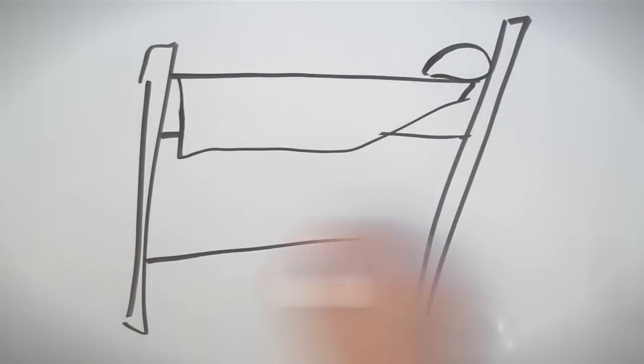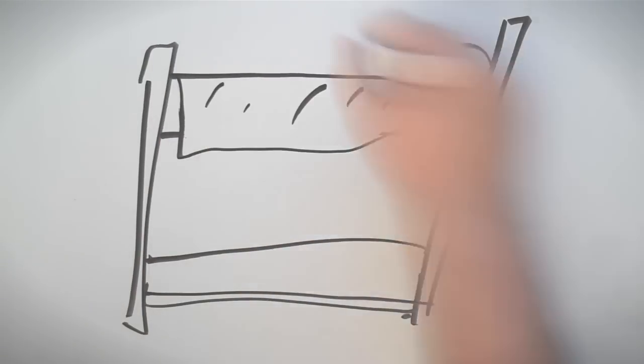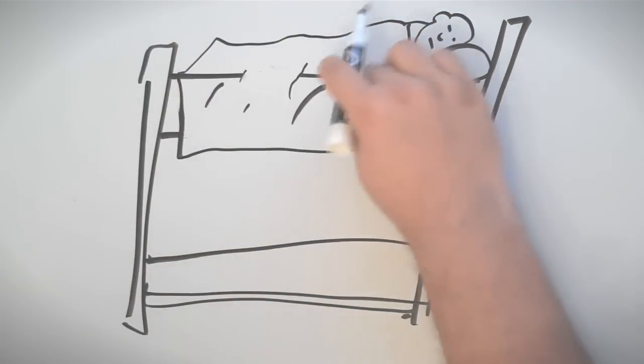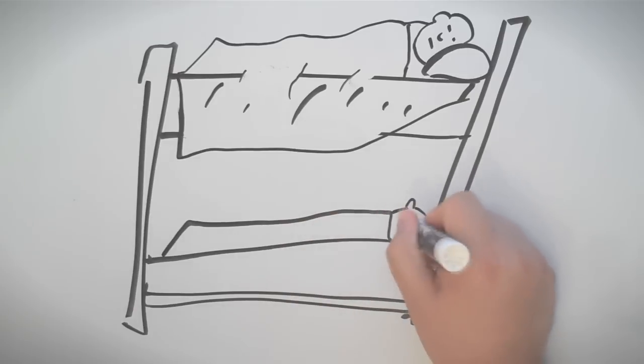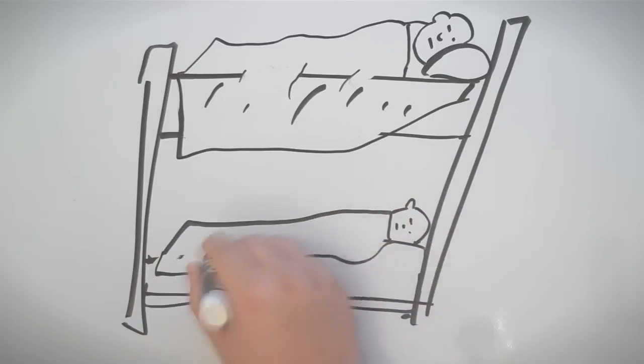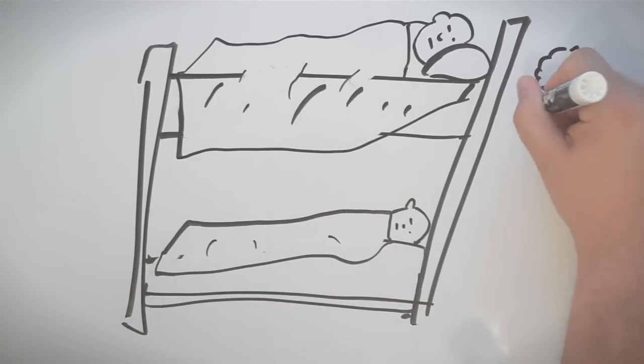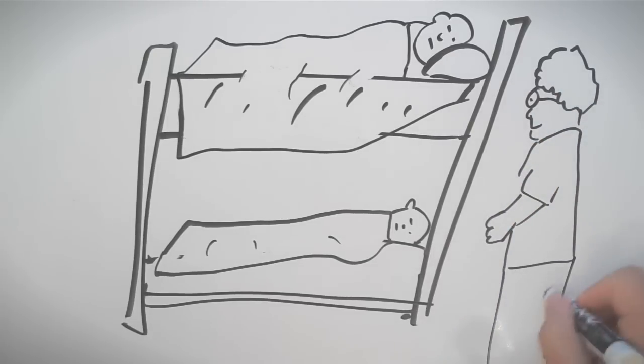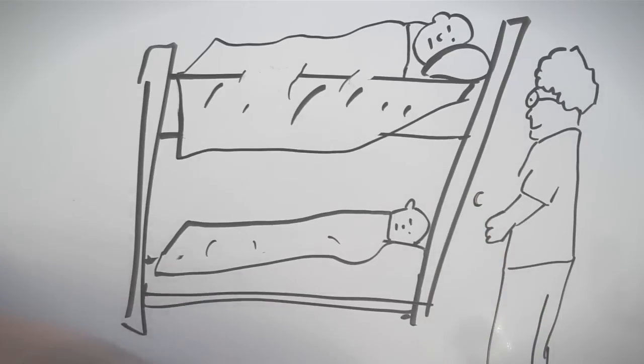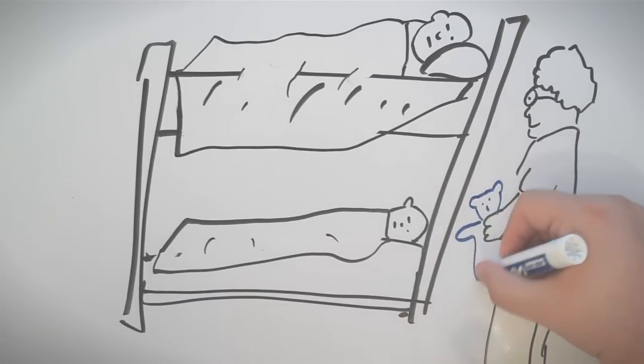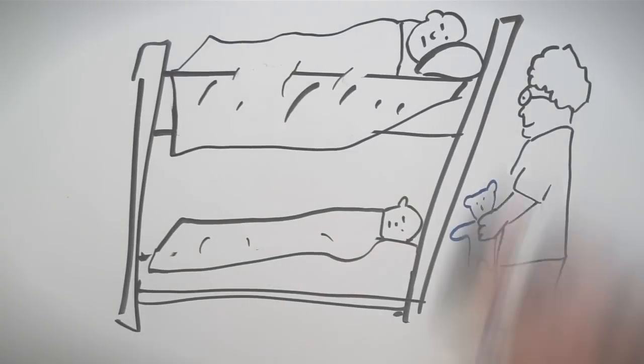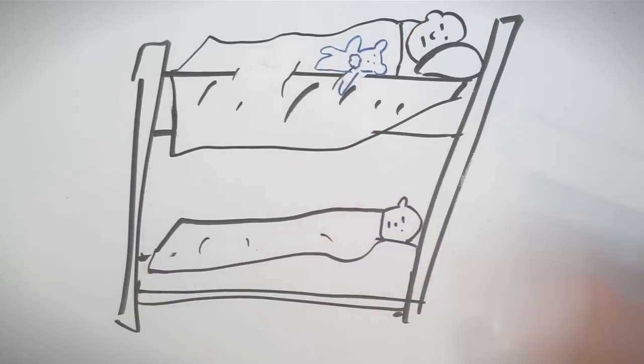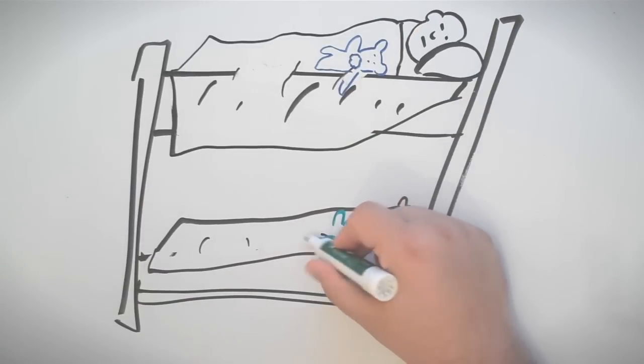That reminded me of when I was a kid and my brother and I used to sleep in a bunk bed. My brother always slept on the top and I slept on the bottom until one night when I begged and begged to be able to sleep on the top. So he let me. And that night, my mom came in the room and she had these stuffed animals that she made. They were Care Bears. And she put the blue one on my bed on the top and the green one on my brother's bed on the bottom.